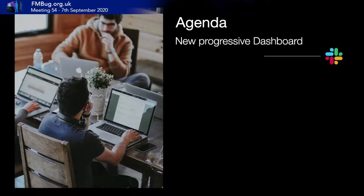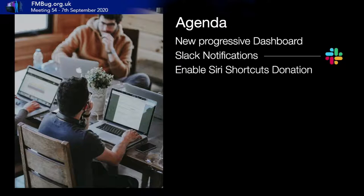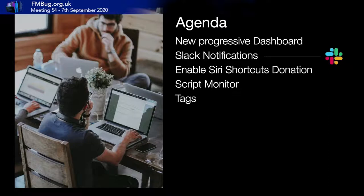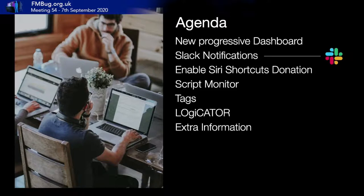The agenda: we'll look at the progressive dashboard added in 7.1, changed Slack notifications, support for Siri Shortcuts donations with a microphone icon, a new feature called Script Monitor, the ability to add tags to any item and search on tags, Logicator support for searching in a specific area, global searching, and an area called Extra Information which gathers and cross-references information about a solution.